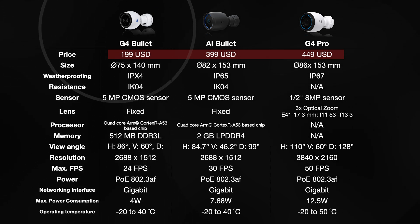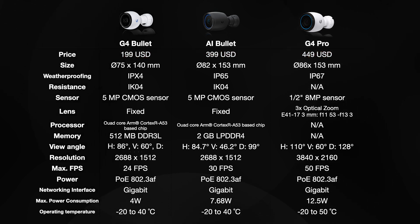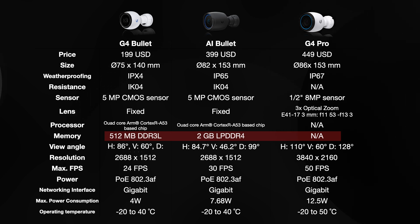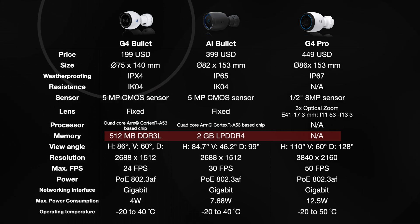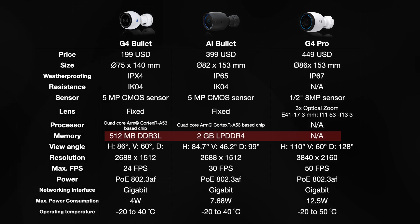Unified AI camera is focusing on edge computing — all smart detection is processed in the camera. Therefore, AI Bullet has 2GB of LPDDR4 memory compared to the G4 Pro's 512MB DDR3. Note that G4 Pro has not specified its memory on the product page.